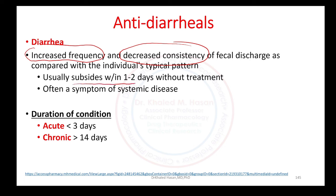Normally, if the patient has diarrhea, it will subside and be cured in one to two days without treatment. Sometimes diarrhea is associated with a systemic disease or considered a symptom of systemic disease. Diarrhea can be classified as acute if it persists less than three days, or chronic if it persists for more than 14 days.